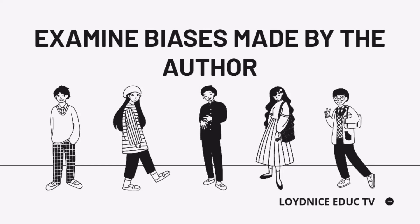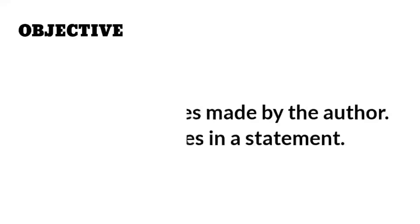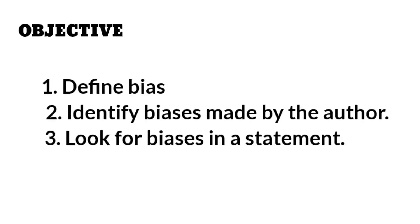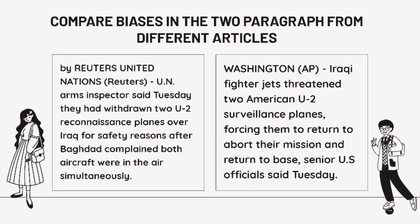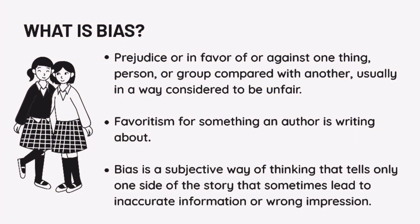Examine biases made by the author. At the end of our lesson, students are expected to define bias, identify biases made by the author, and look for biases in a statement. Now take a closer look and compare biases in the two paragraphs from different articles.